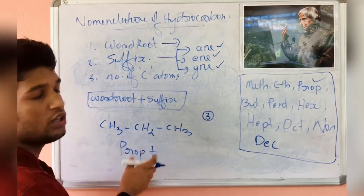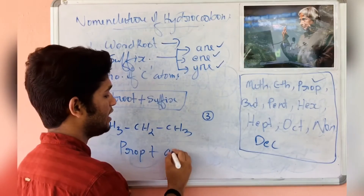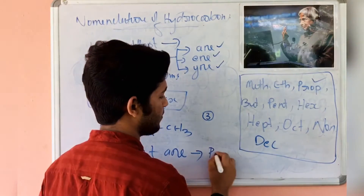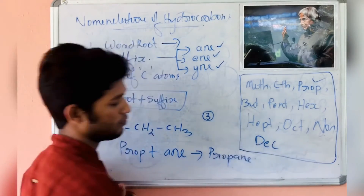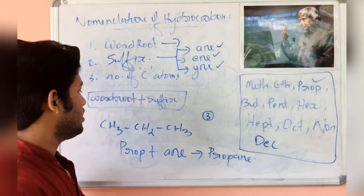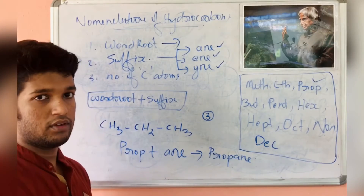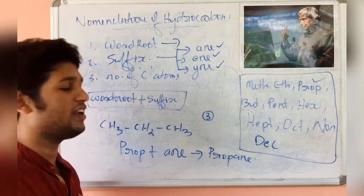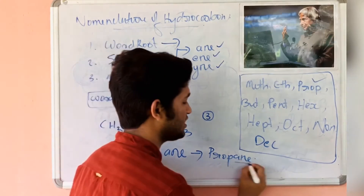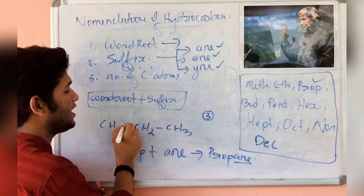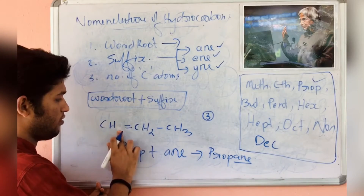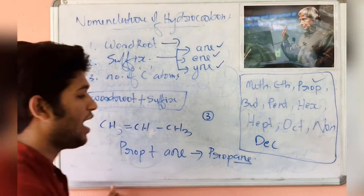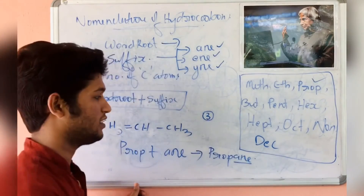The bond between the carbon atoms is single, so we will use 'ane' as the suffix. Resultantly, we will get 'propane'. If a double bond is present — if an unsaturated compound is coming — the only change will happen in the suffix. If a double bond is present, the 'ane' will become 'ene', and the name will become 'propene'.